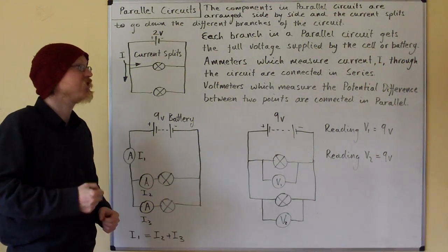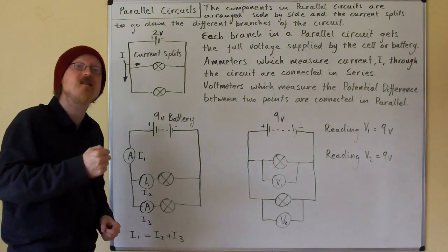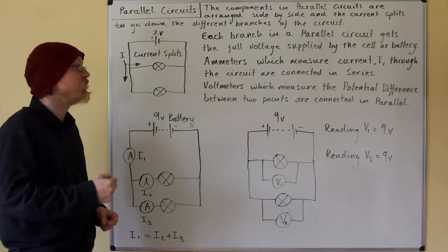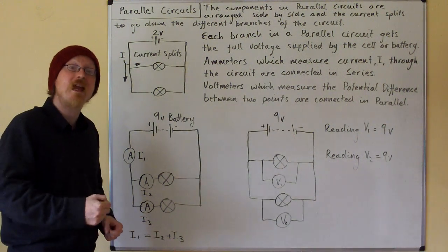Ammeters, which measure current through the circuit, are connected in series, and voltmeters, which measure the potential difference between two points, are connected in parallel.